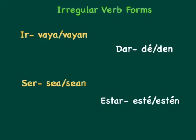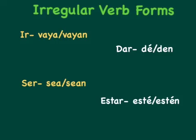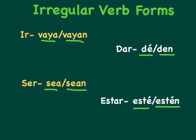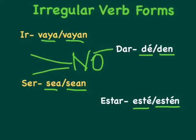There always seems to be irregular verb forms. In the formal commands, the irregular verb forms are: ir — 'to go' — which would be vaya or vayan; ser, which would be sea or sean, depending on usted or ustedes; dar, which would be dé or den; and estar, which would be esté or estén. And again, to make any of these negative — like 'don't go,' 'don't be,' 'don't give,' or 'don't be' for estar — you just add a no in front of any of these.